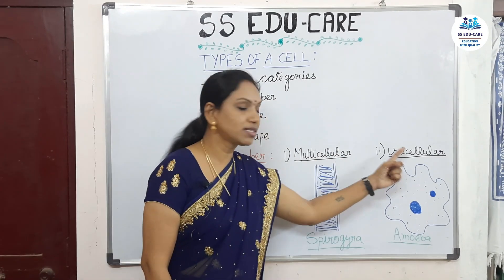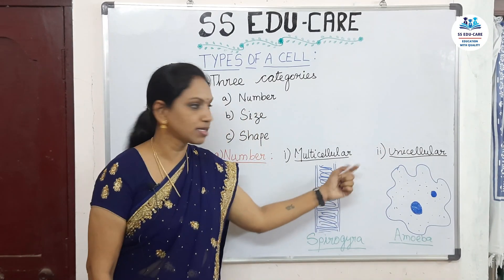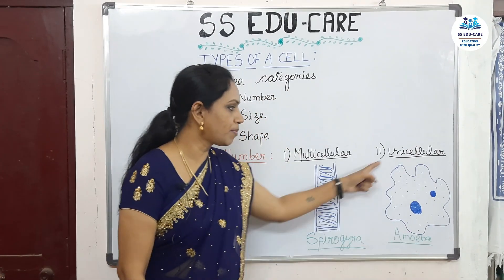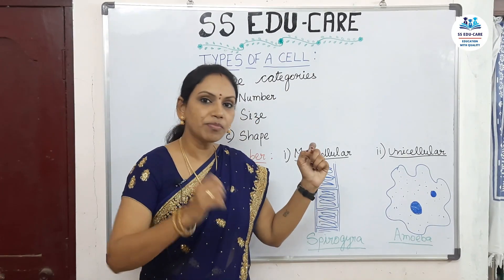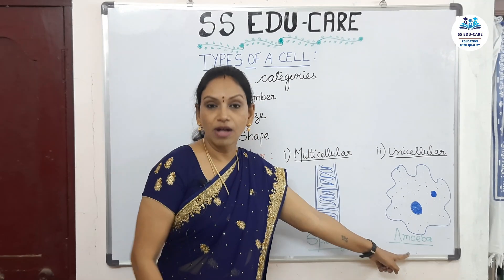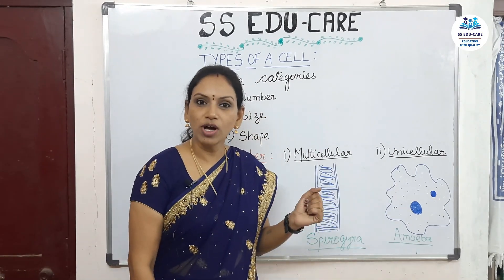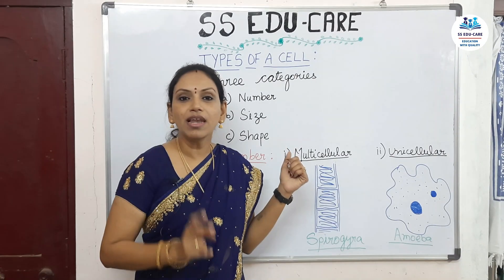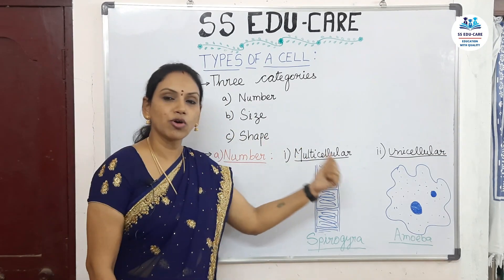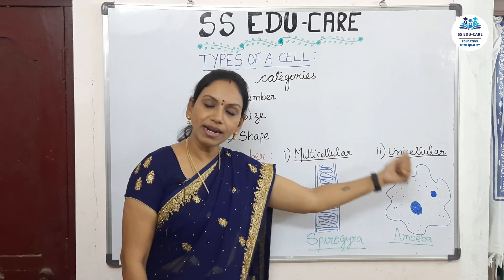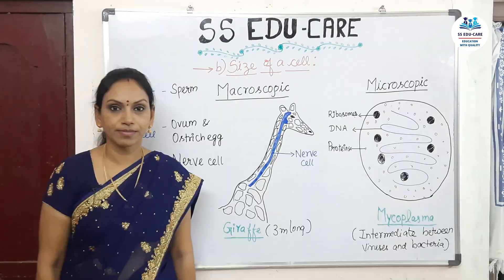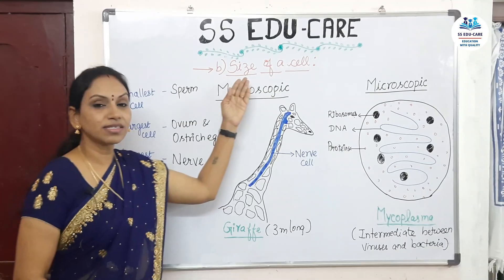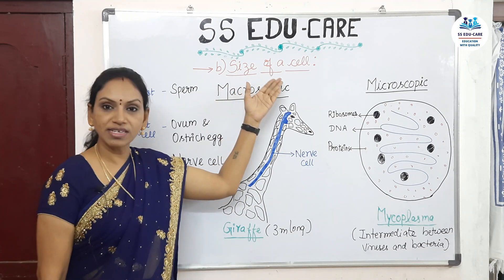Coming to unicellular — uni means single, meaning the whole body is made up of just a single cell. A very simple example is Amoeba. We all love to draw Amoeba because we can draw it in any shape. So cells are divided into two types based on number: multicellular and unicellular.